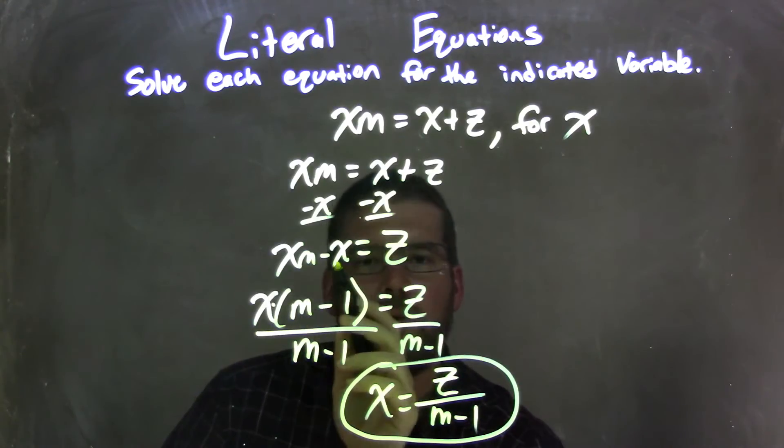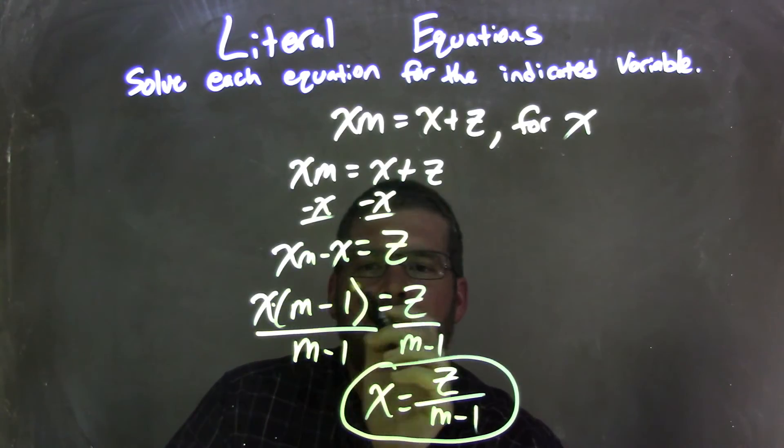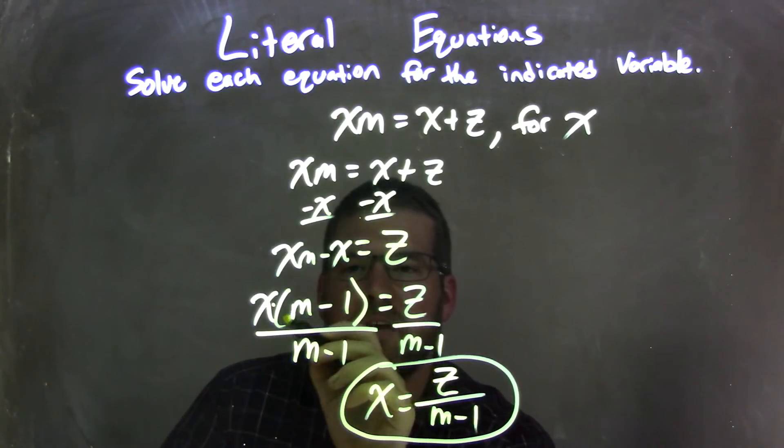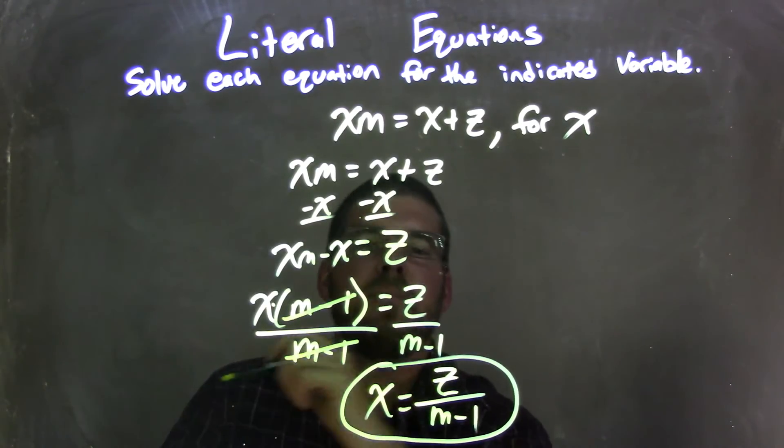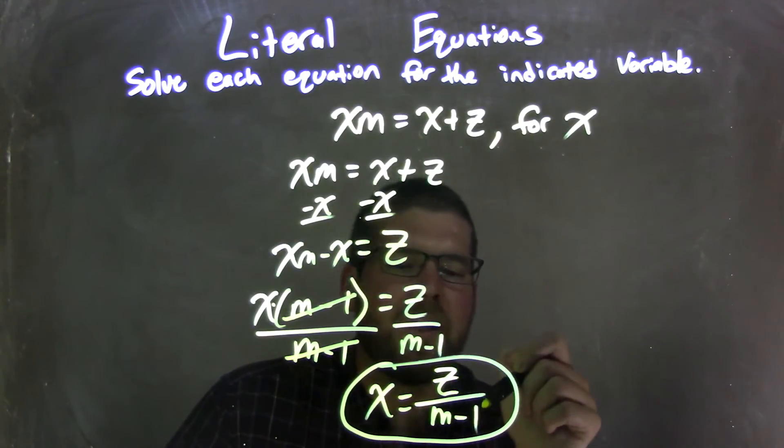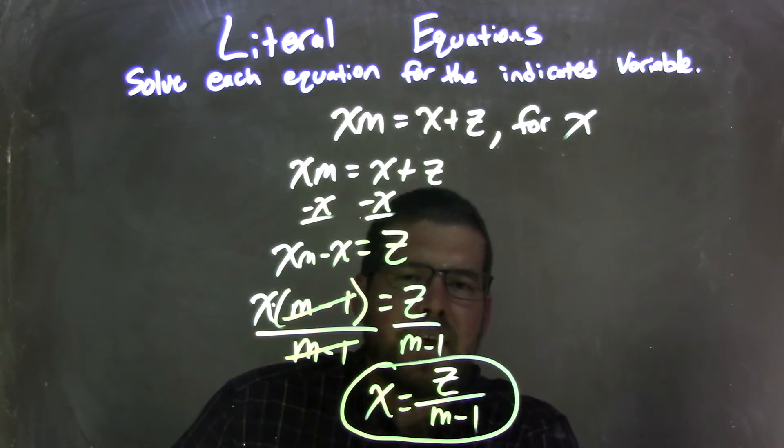I then pulled out an x from both parts here, leaving me with x times m minus 1 in parentheses equals z. I then divided m minus 1 to both sides, canceling out the m minus 1, and now x is all isolated by itself, and it's equal to z over m minus 1, which is our final answer.